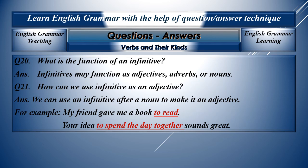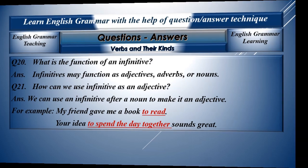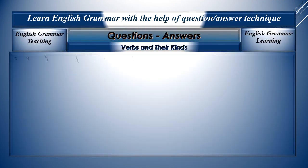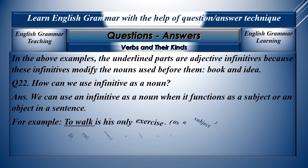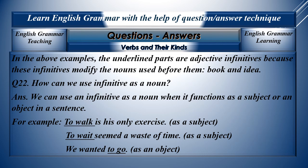Question twenty-one: How can we use an infinitive as an adjective? We can use an infinitive after a noun to make it an adjective. Most of the time we find adjectives before a noun, but in this case of infinitives, it should be used after the noun. For example, 'my friend gave me a book to read' — 'to read' adds something to the meaning of 'book'. 'Your idea to spend the day together sounds great.' These infinitives modify the nouns used before them.